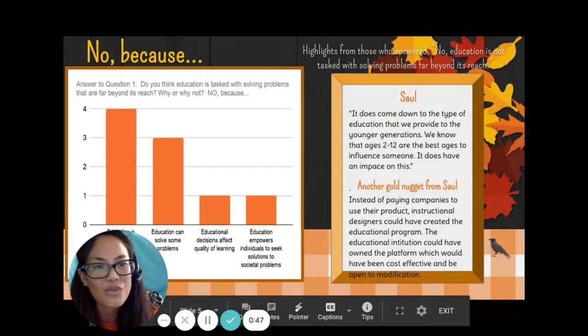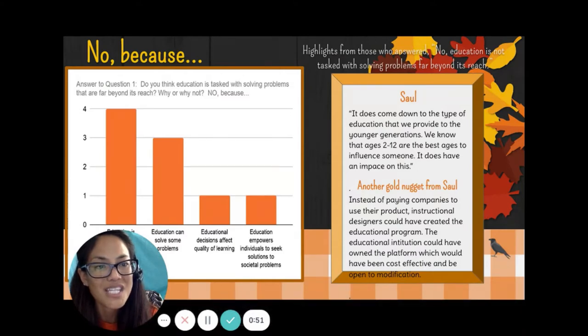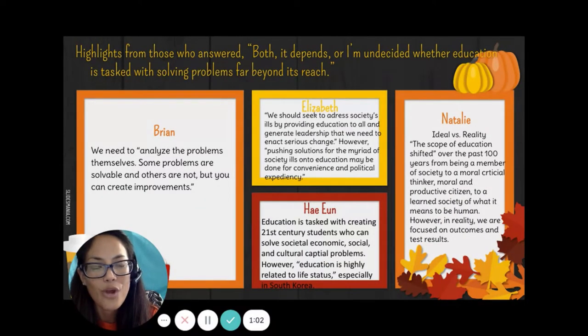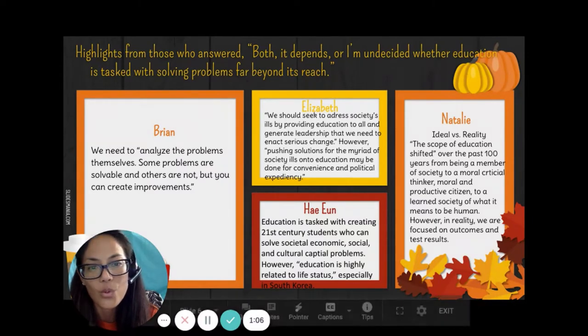As for the themes of no, the most reoccurring data included that education is intertwined in life status and outcomes, and that education can solve some problems. Here are highlights from Saul. Here are highlights from Ryan, Elizabeth, He-Yoon, and Natalie, who chose both, it depends, or who were undecided.